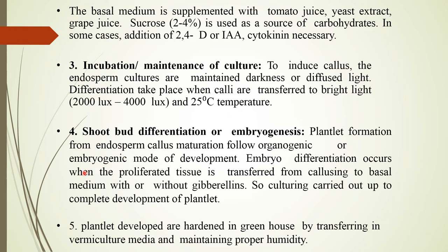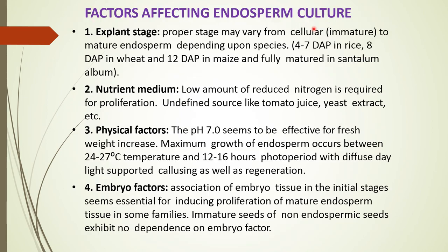Differentiation takes place when calli are transferred to bright light of 2000 to 4000 lux at 25°C. Shoot bud differentiation or embryogenesis — plantlet formation from endosperm callus — follows an organogenic or embryogenic mode of development. Embryo differentiation occurs when proliferated tissue is transferred to basal medium with or without gibberellins. Culturing is carried out up to complete development of the plantlet, which is then hardened in a greenhouse by transferring to vermiculite media and maintaining proper humidity.